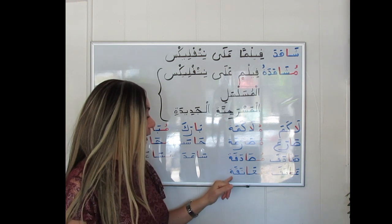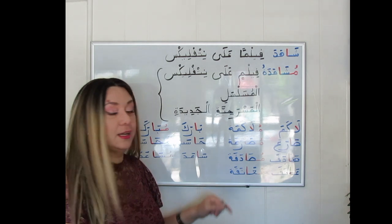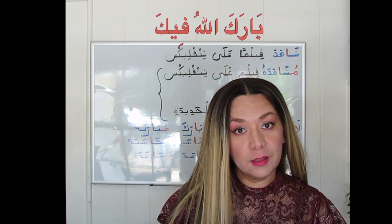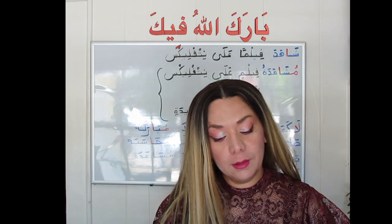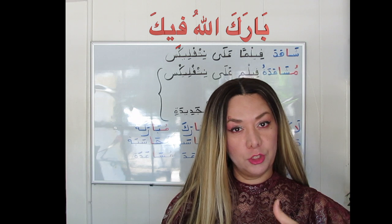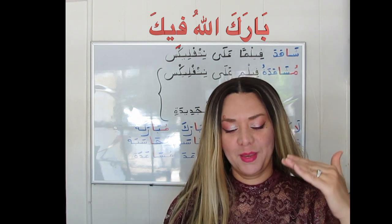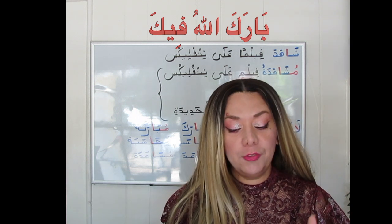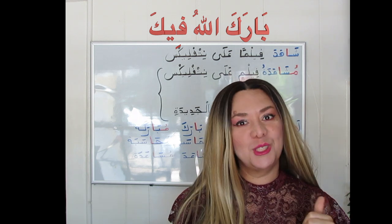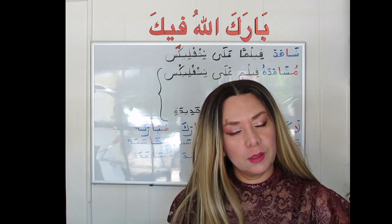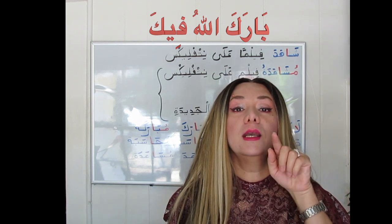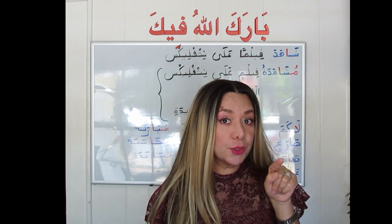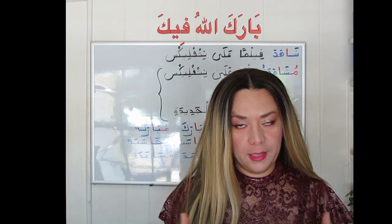These verbal nouns always end with the taa of femininity — the tied taa. So, بَارَكَ اللهُ فِيكَ — God bless you. اللهُ is the subject of بَارَكَ, and the subject in Arabic comes after its verb. بَارَكَ goes well with the preposition فِي. فِيكَ means 'you', so God bless you. بَارَكَ اللهُ فِيكَ — the object pronoun specifies the person in question.